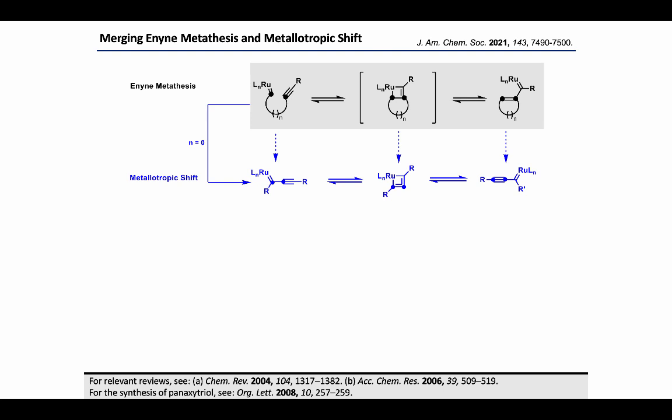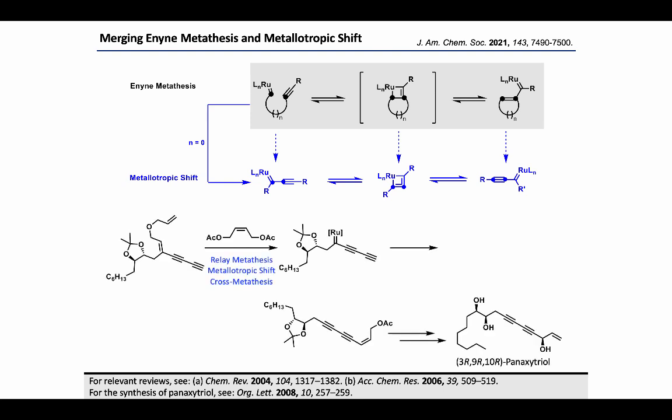If we assume the tether length to be zero, we can define a related concept called metallotropic shift. In the case of metallotropic shift, the ruthenium-alkylidene carbene is seen to propagate over the alkyne chain. This phenomenon is mechanistically related to enyne metathesis. The concepts of metathesis and metallotropy have been frequently applied in organic synthesis, including the total synthesis of several natural products such as panoxytriol.